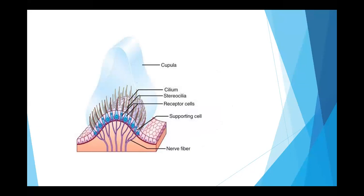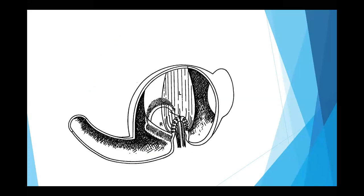When the cupola moves left and right, the hair cells will also move with it. When it is moving in an excitatory direction — that is, shorter stereocilia towards taller stereocilia — we get excitatory responses. When moving in the opposite direction, from taller to shorter stereocilia, we get inhibitory responses.